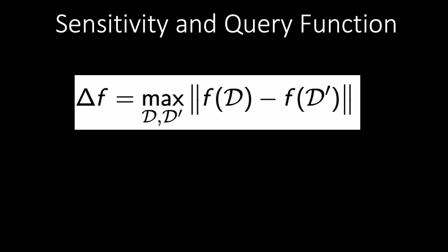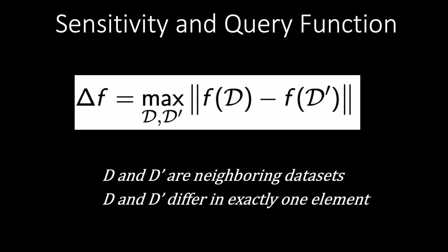D and D prime are neighboring databases. This means that they differ in exactly one element, meaning for example that every citizen of your hometown is in D.